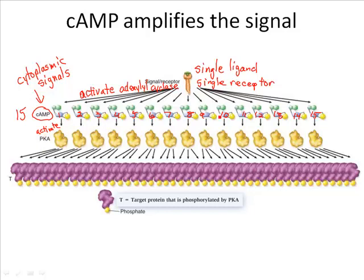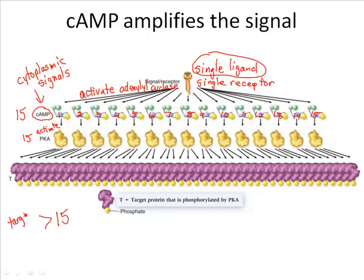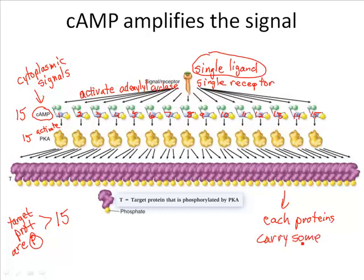As we discussed, the role of cyclic AMP is to activate protein kinase A, which is a general kinase enzyme found in cells. How many PKAs are activated in this case? For every one cyclic AMP, we activate one PKA. So now we have 15 enzymes activated in response to a single ligand molecule. And now each of those PKAs can phosphorylate many target proteins. Far more than 15 target proteins are phosphorylated, and each of those proteins can carry out some cellular function.